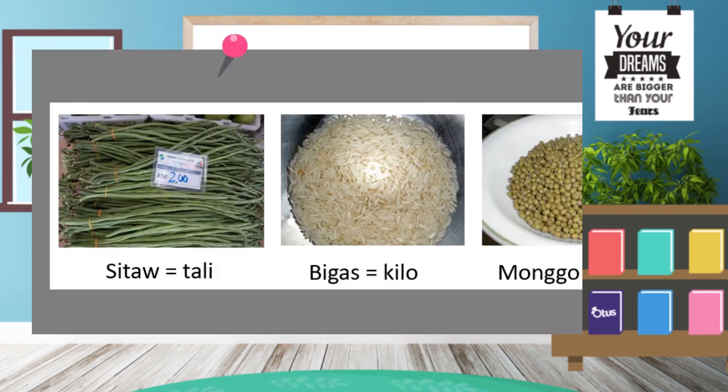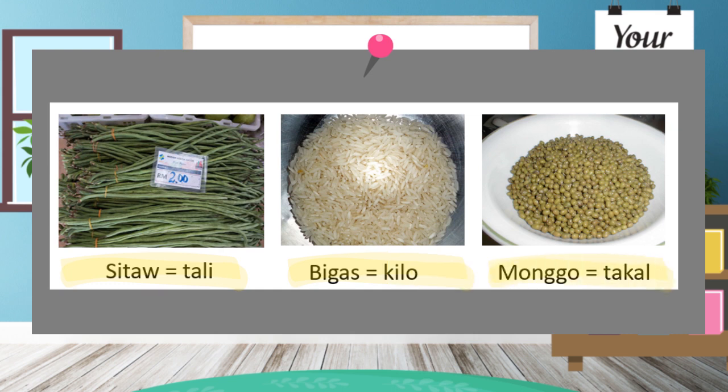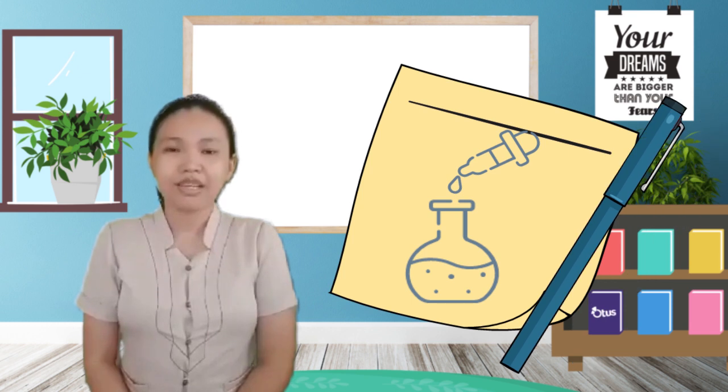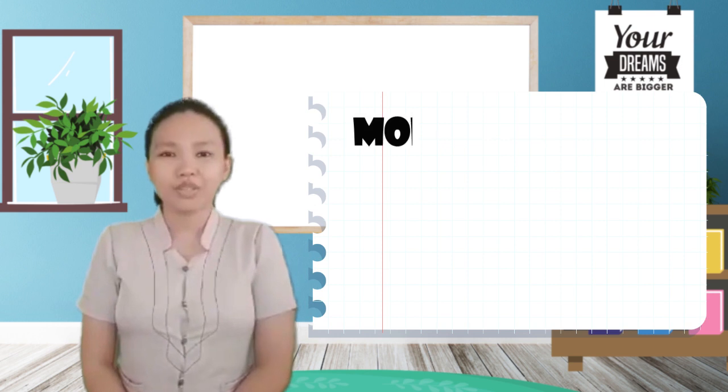Today, we will all learn this using the concept of mole. To start and better understand our lesson, observe and analyze the given pictures. This idea of using different conversion units of measurement in selling and buying food ingredients and vegetables are also used by scientists in measuring the number of particles in a specific measurement known as mole.